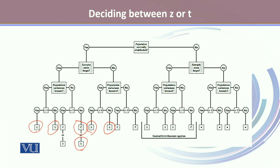If the populations are normally distributed, sample sizes are not large, and population variances are not known: if the variances are equal, we will use T to calculate the reliability factor. If the population variances are not known and not equal, we will use T' to calculate the reliability factor.